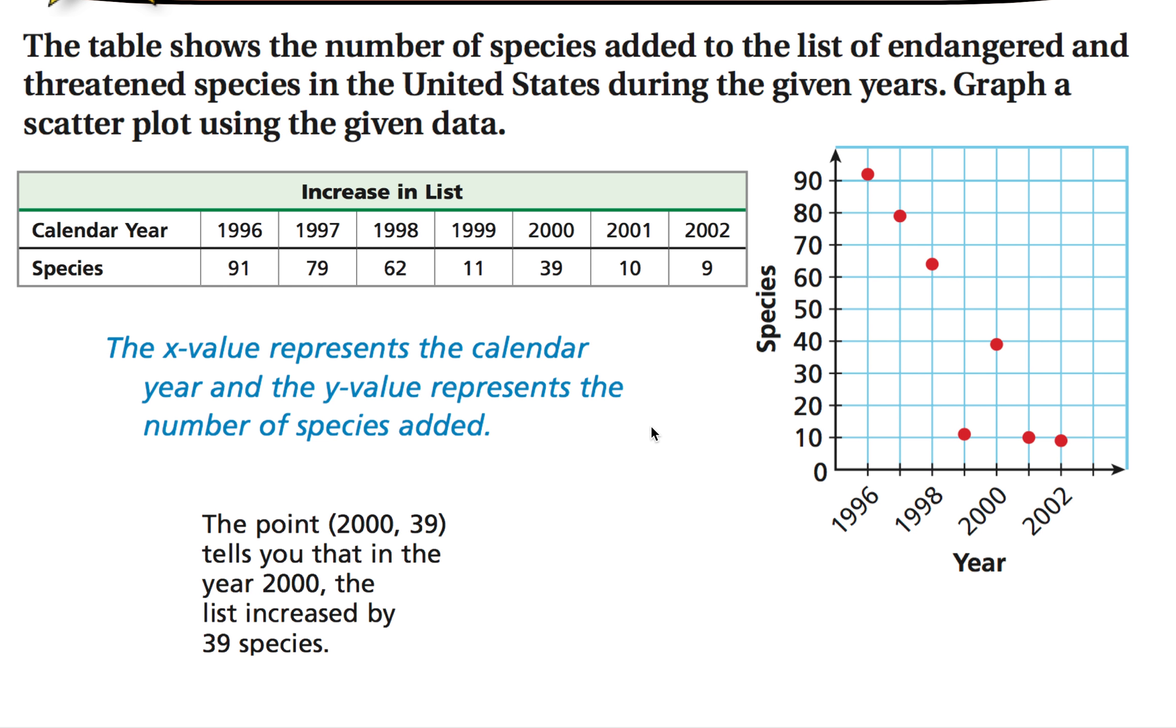And I've already done that for you here, so that's what your data should look like. The point 2000 comma 39 tells you that in the year 2000, the list of endangered species increased by 39 species. So this is called a scatter plot. It's just simply some data points based on some kind of data that we're given. We never connect the data points. It's a discrete graph. So it's just independent values.